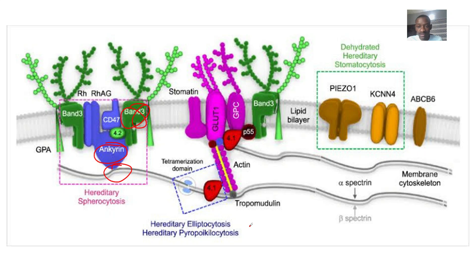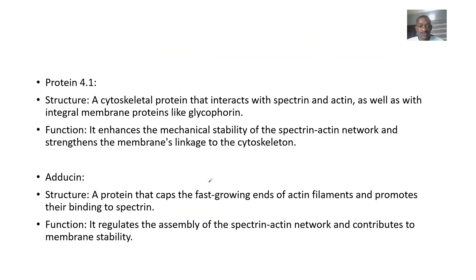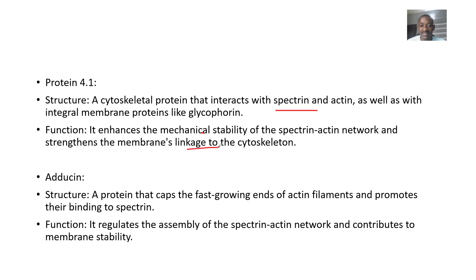Protein 4.1 sits on the spectrin. Protein 4.1 interacts with spectrin and actin, as well as integral membrane proteins like glycophorin. Its function is to enhance the mechanical stability of the spectrin-actin network and strengthen the membrane's linkage to the cytoskeleton.